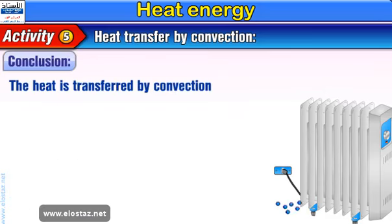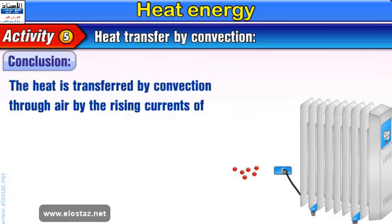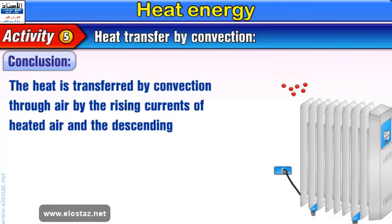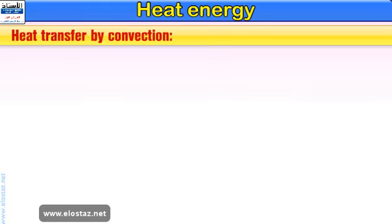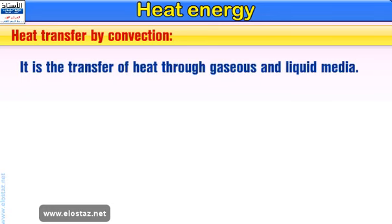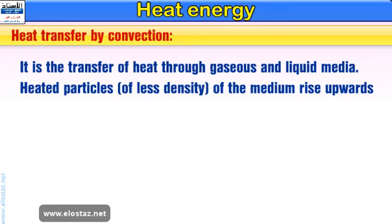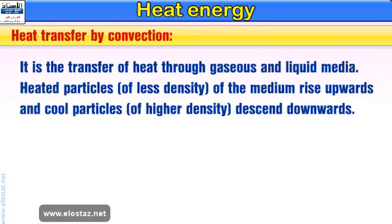Conclusion: The heat is transferred by convection through air by the rising currents of heated air and the descending currents of cooler air. Note that heat is transferred by convection in liquids in the same way it is transferred through gases. Definition of heat transfer by convection: It is the transfer of heat through gaseous and liquid media. Heated particles of less density rise upwards and cooler particles of higher density descend downwards.